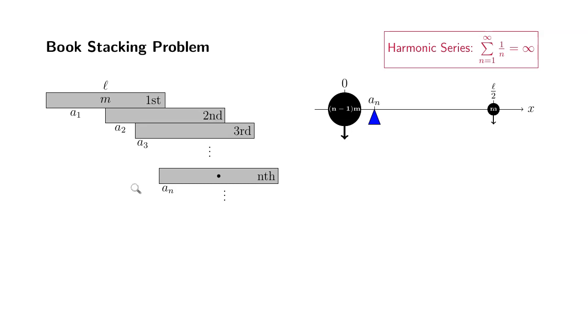So we already know that the center of mass of the first n minus 1 book is placed at the edge of the nth book. The center of mass of the nth book is going to be right in the middle. So we can actually simplify this system this way. We can place n minus 1 book right at the x equals 0, which is at the edge here.